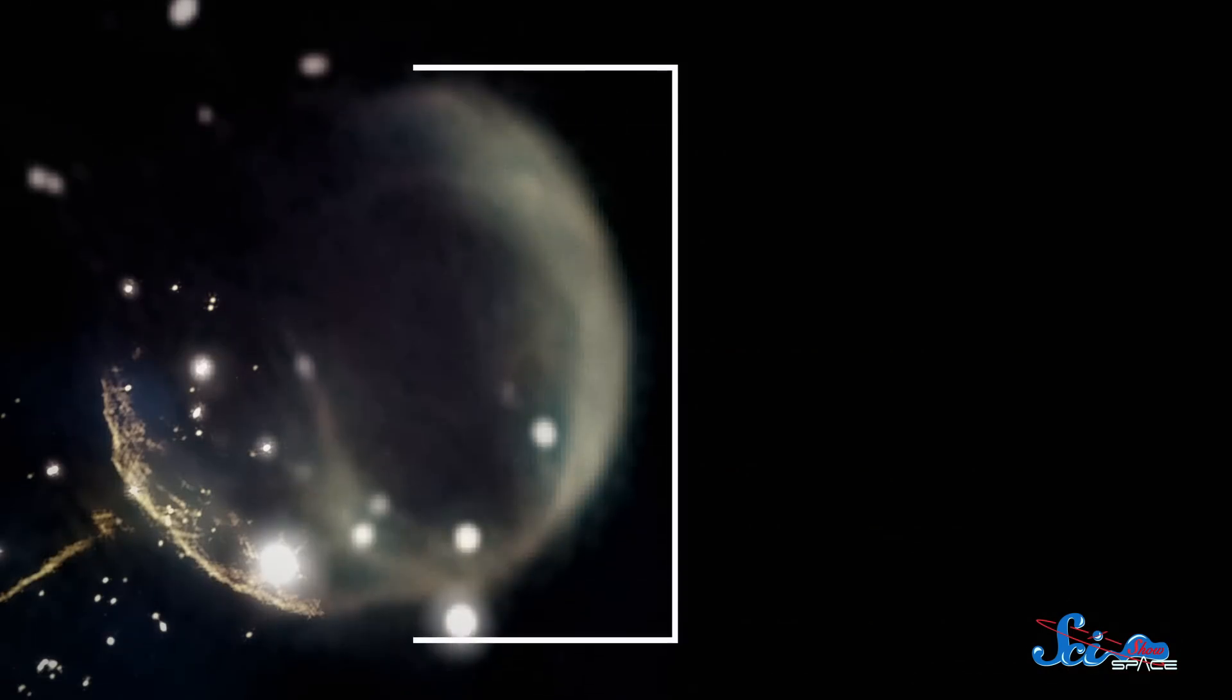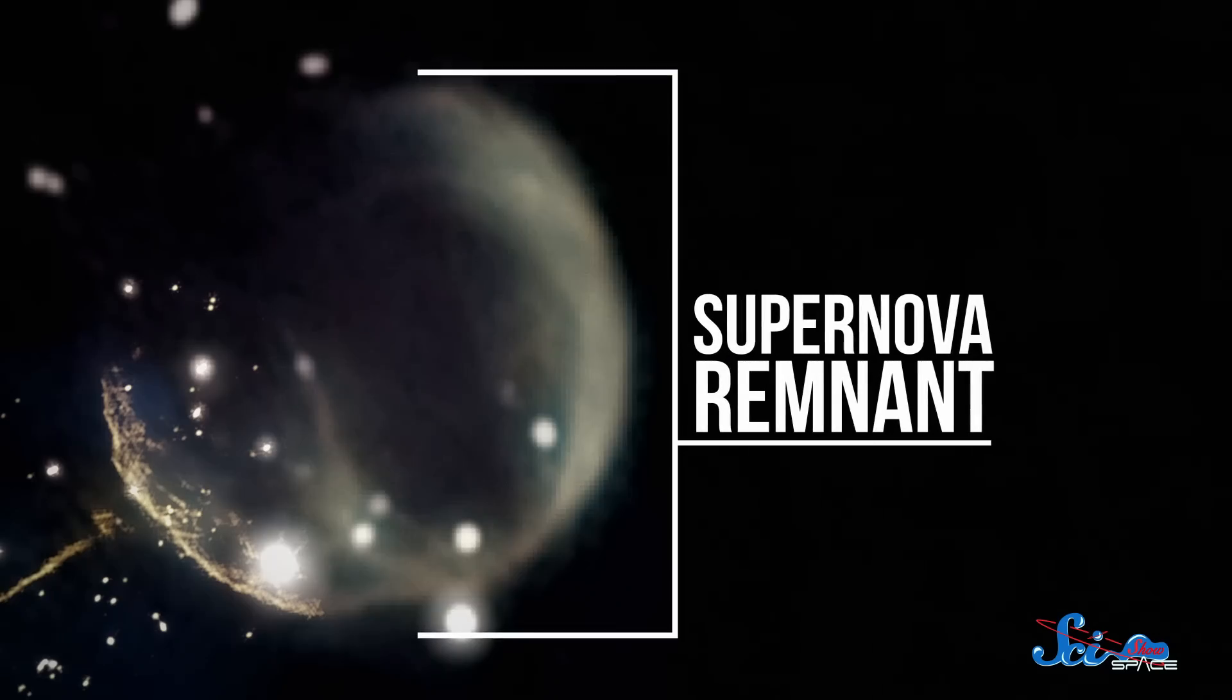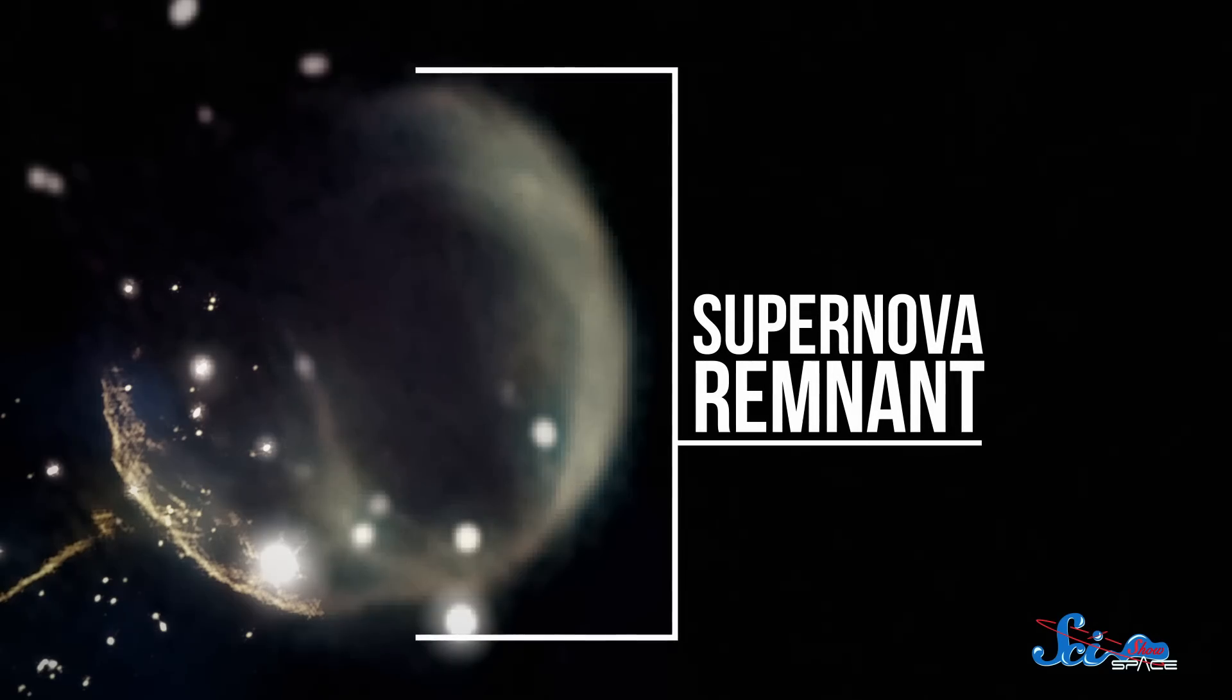Scientists think this object was formed thanks to a supernova. Based on the size of the bubble of material that the supernova left behind, called a supernova remnant, the team estimates the explosion happened around 10,000 years ago, crushed the dying star's core into a pulsar, and then gave it a kick in one direction.